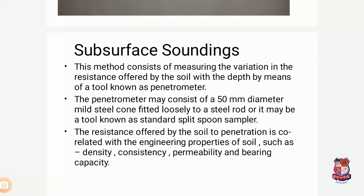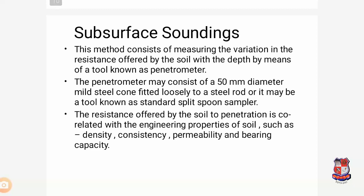The subsurface sounding method involves measuring the variation in resistance offered by the soil using a tool known as a penetrometer. The penetrometer consists of a 50 mm diameter mild steel cone fitted loosely at a steel rod, known as a standard split spoon sampler. The resistance offered by the soil to penetration is correlated with the engineering properties of soil such as density, consistency, permeability, and bearing capacity. The standard split spoon sampler is a very important tool to remember.